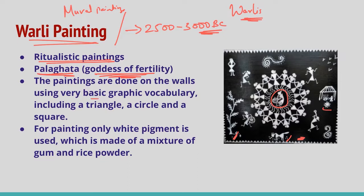Traditionally, the paintings are drawn on walls using very basic graphics that include a triangle, circle, and square. These shapes are inspired from nature — a circle is inspired from the sun and moon, a triangle from conical-shaped trees or mountains, and a square from a sacred enclosure or piece of land. The base is made of a mixture of mud, branches, and cowdung, giving it a red ochre color.